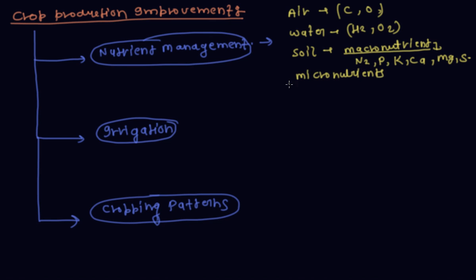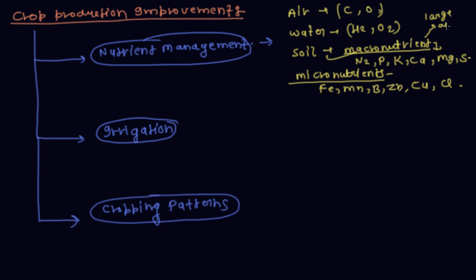Soil also gives micronutrients such as iron, manganese, boron, zinc, copper, and chlorine. Macronutrients are nutrients required by plants in large amounts, while micronutrients are required in small amounts.